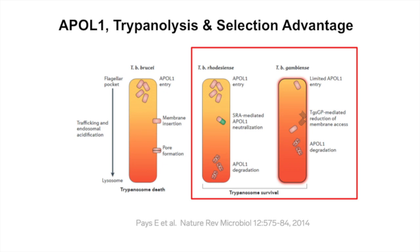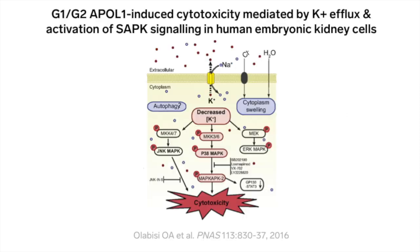Unfortunately, the cost of this evolutionary one-upmanship came at a great price. Paired expression of the G1 or G2 risk alleles of APOL1 confer markedly increased susceptibility to renal disease among global descendants of sub-Saharan Africans and is linked to a whole host of non-diabetic kidney diseases in African Americans, including HIV-associated nephropathy, FSGS, hypertension-attributed nephrosclerosis, sickle cell nephropathy, lupus nephritis, and chronic end-stage kidney disease. Many of these disorders exhibit a collapsing phenotype. The mechanisms involved in APOL1-induced injury to human cells are not well understood, though signaling pathways resulting in apoptosis, necroptosis, and autophagy have been implicated.